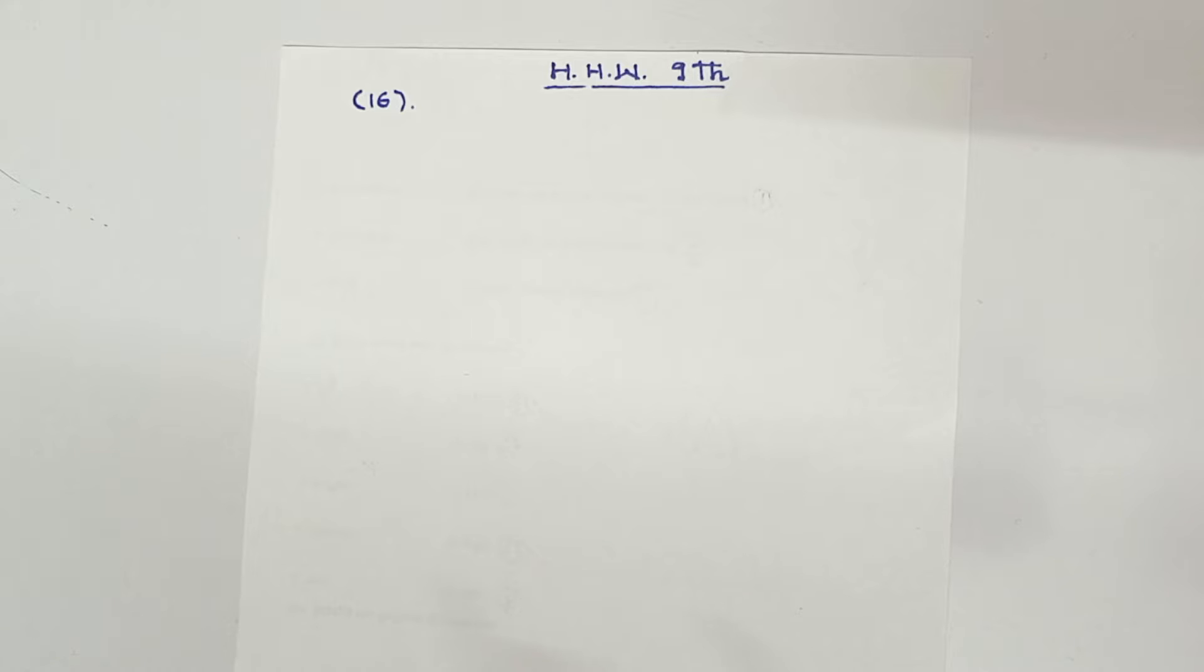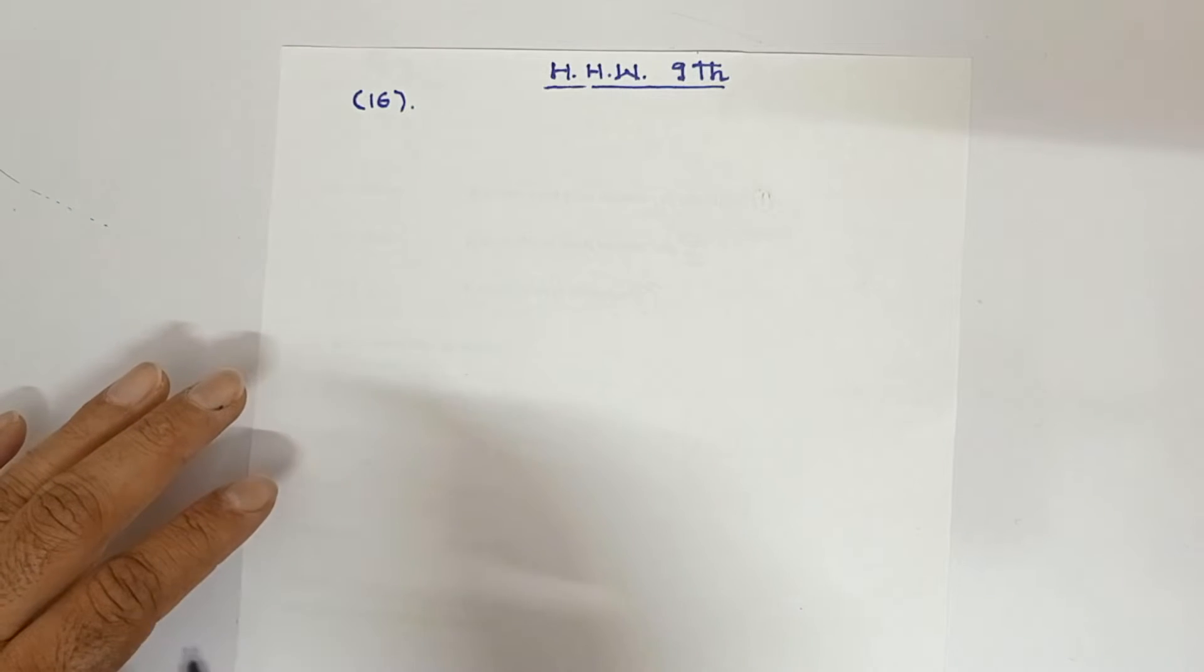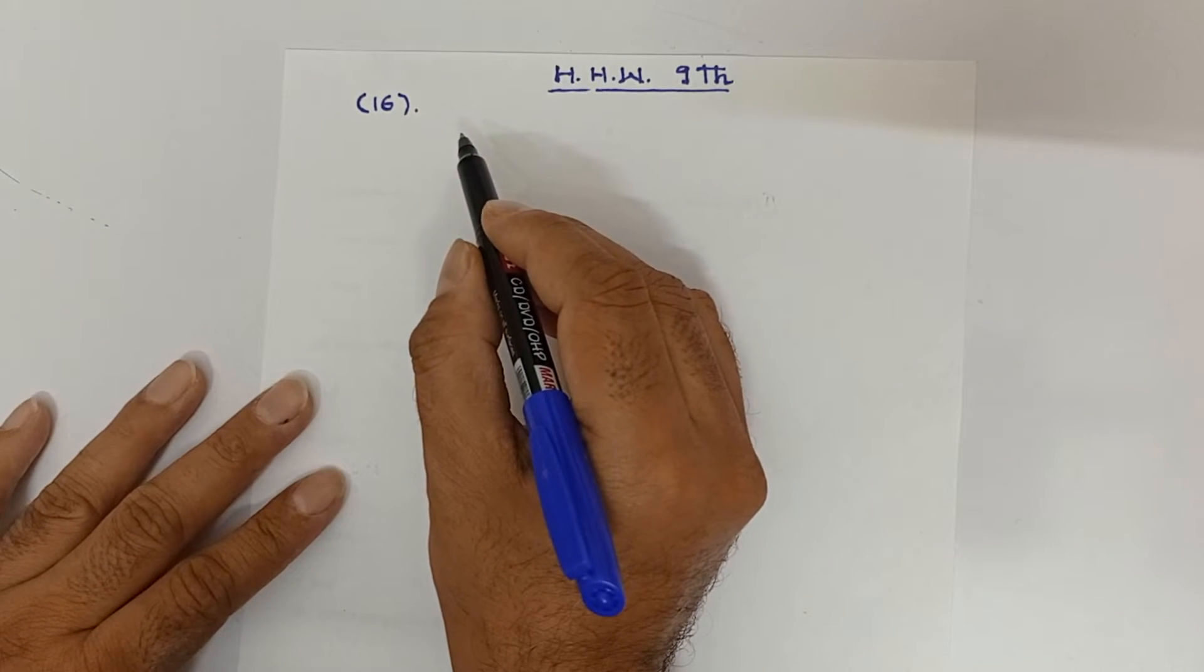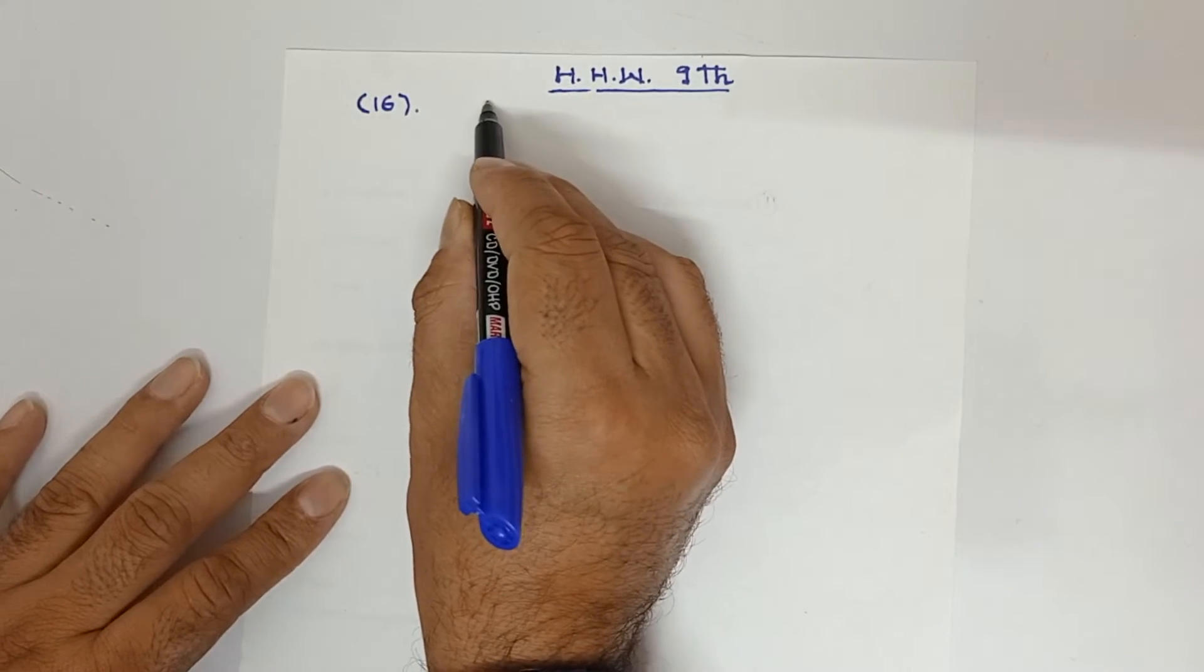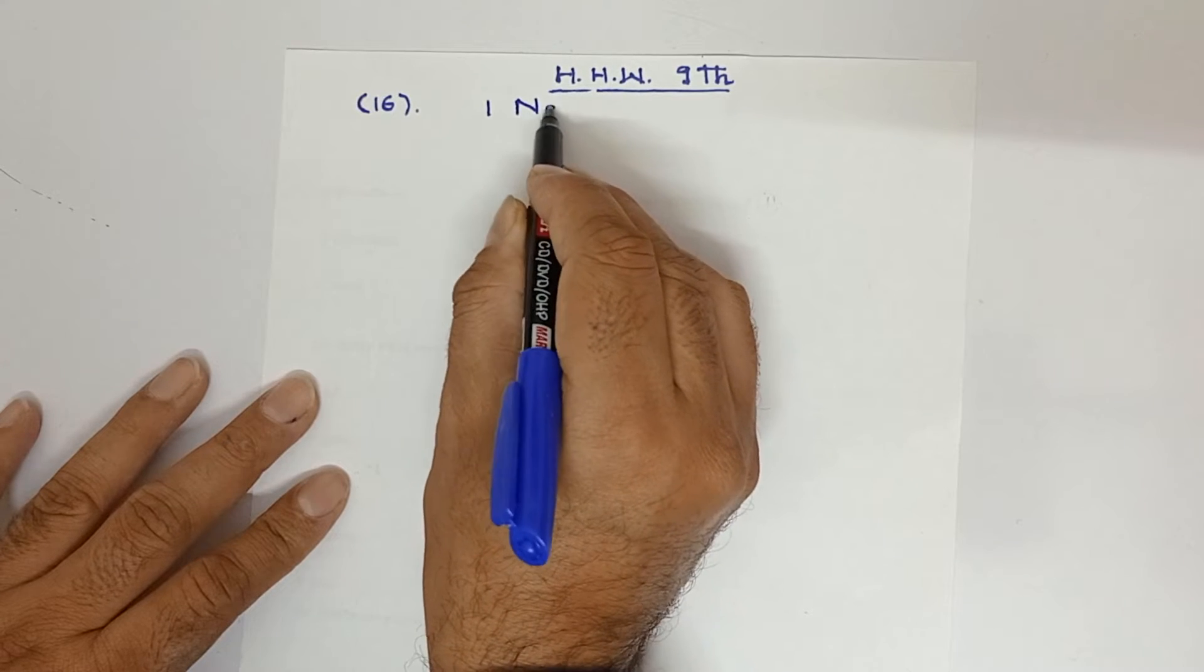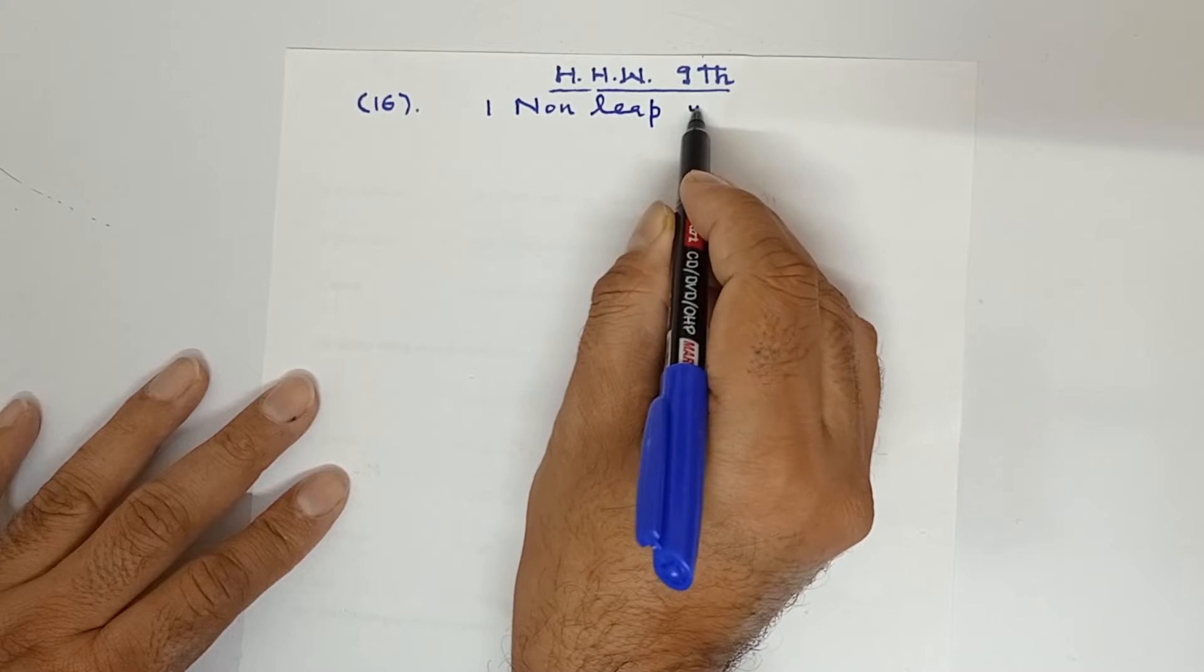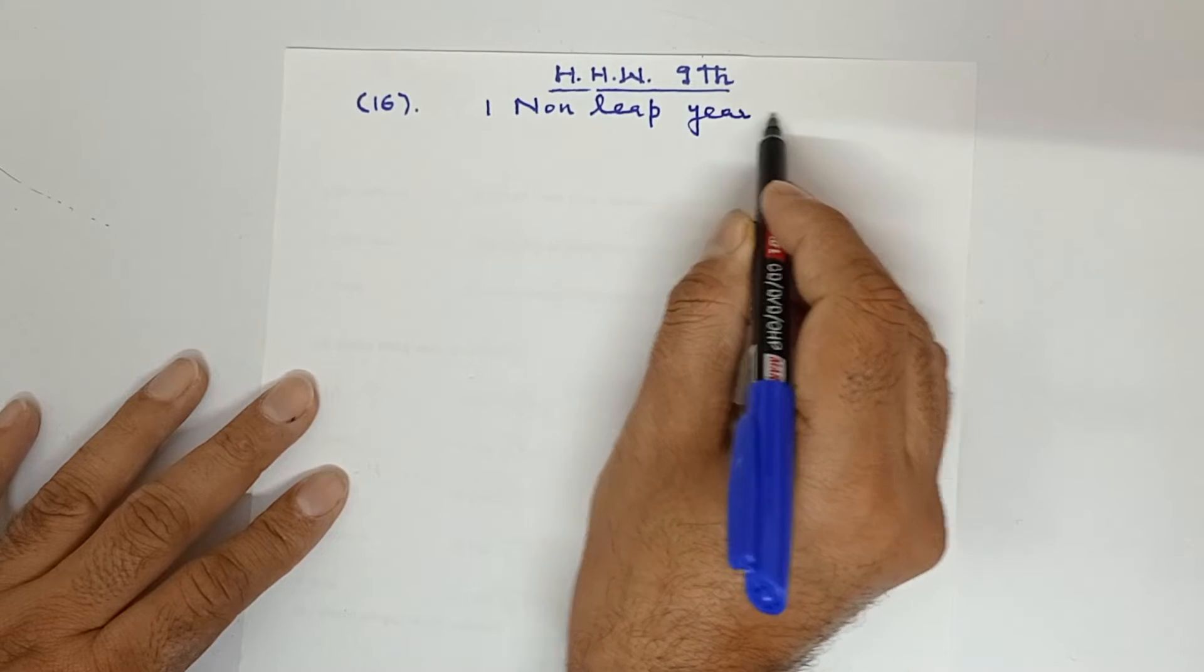I hope you have already done up to question number 15. So we'll do the 16th sum. Find the probability that a non-leap year has 53 Sundays. So in one non-leap year, there are 365 days.